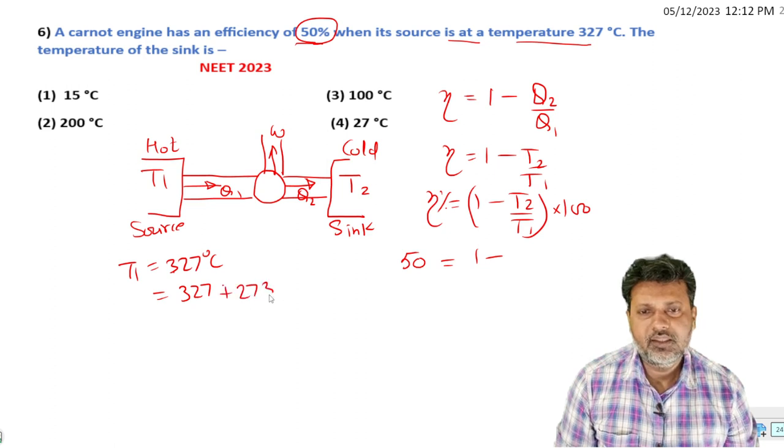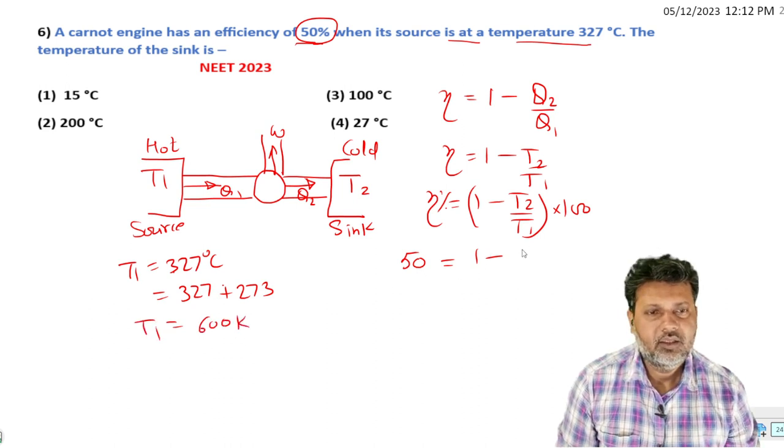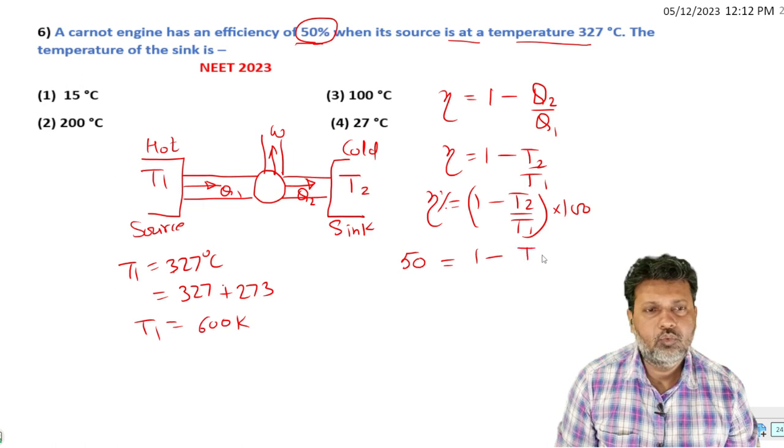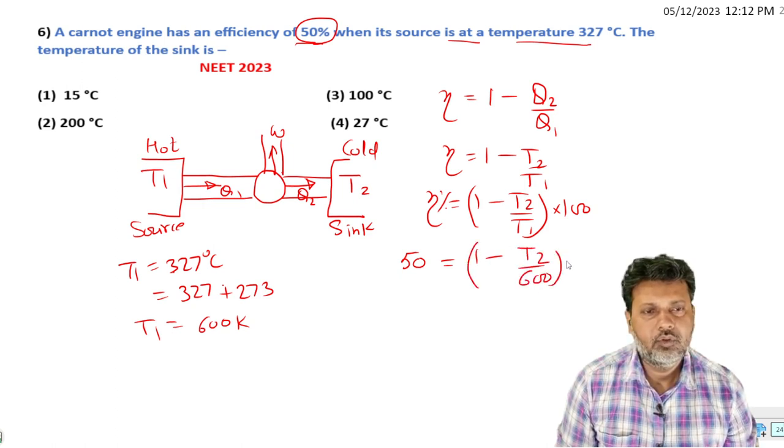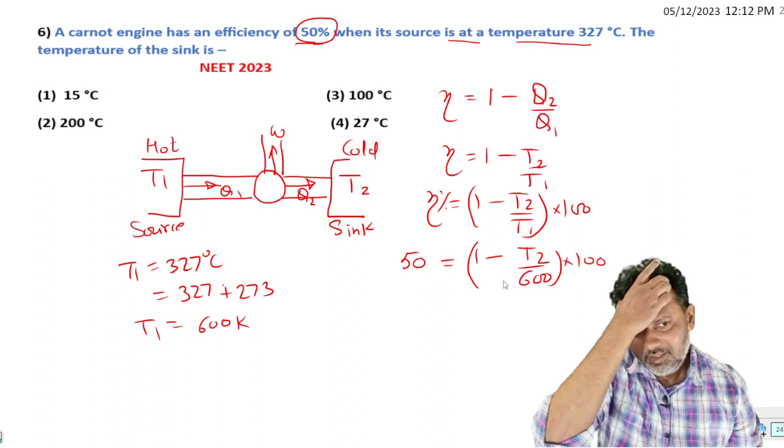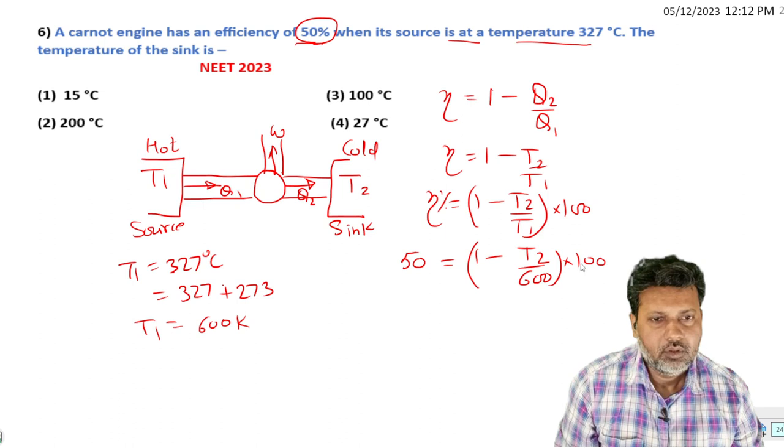This gives us 600 Kelvin. So T1 equals 600 Kelvin. Now we have 50 equals (1 minus T2 by 600) into 100.